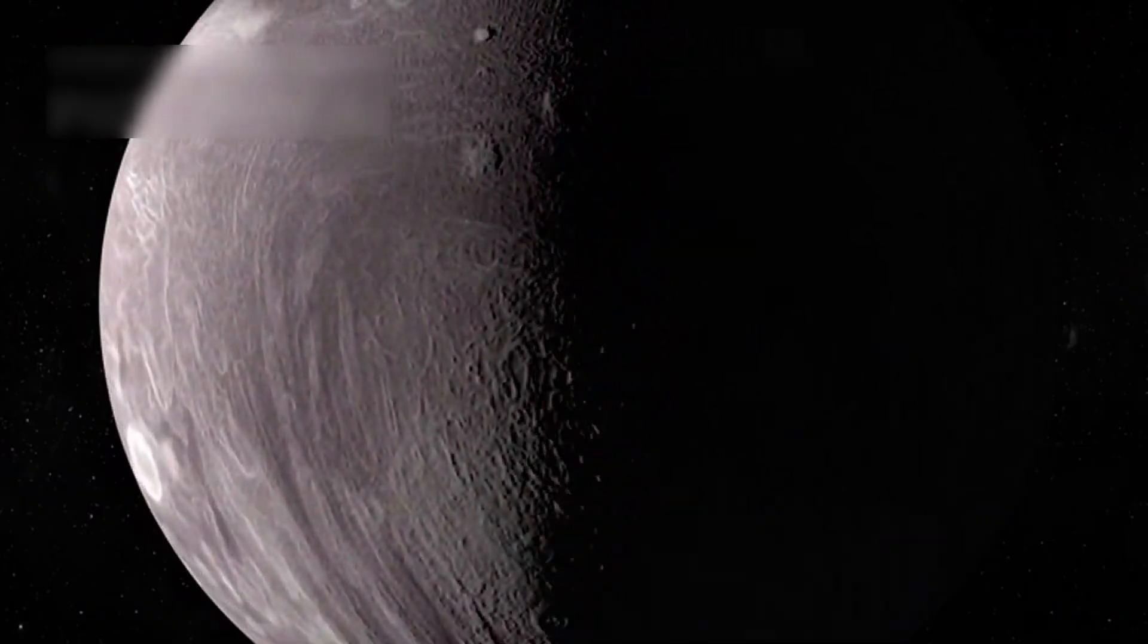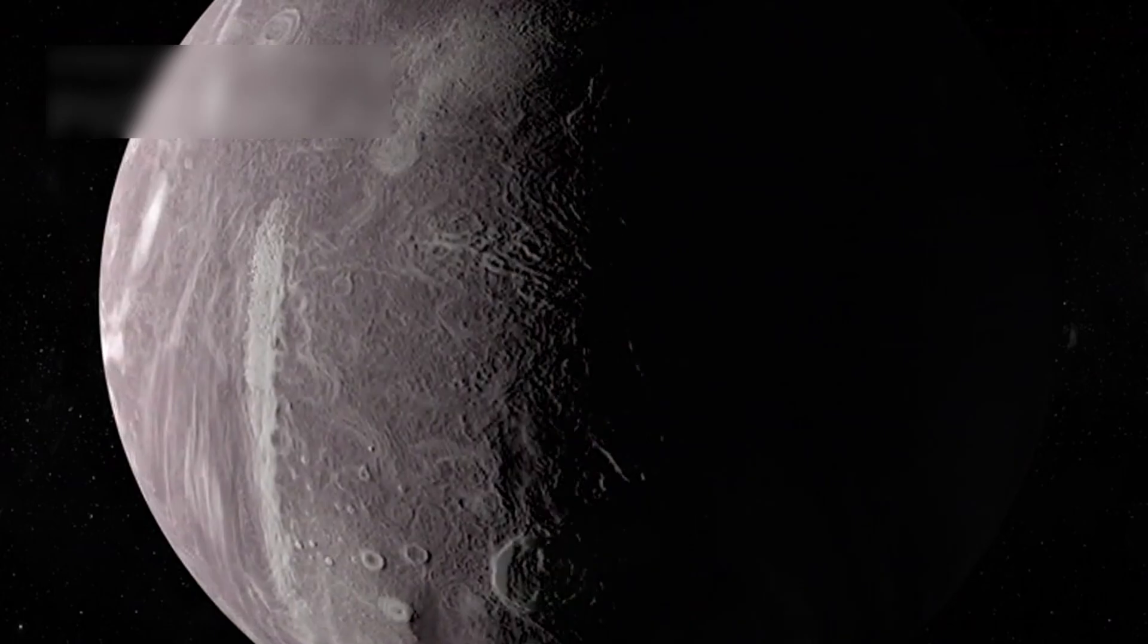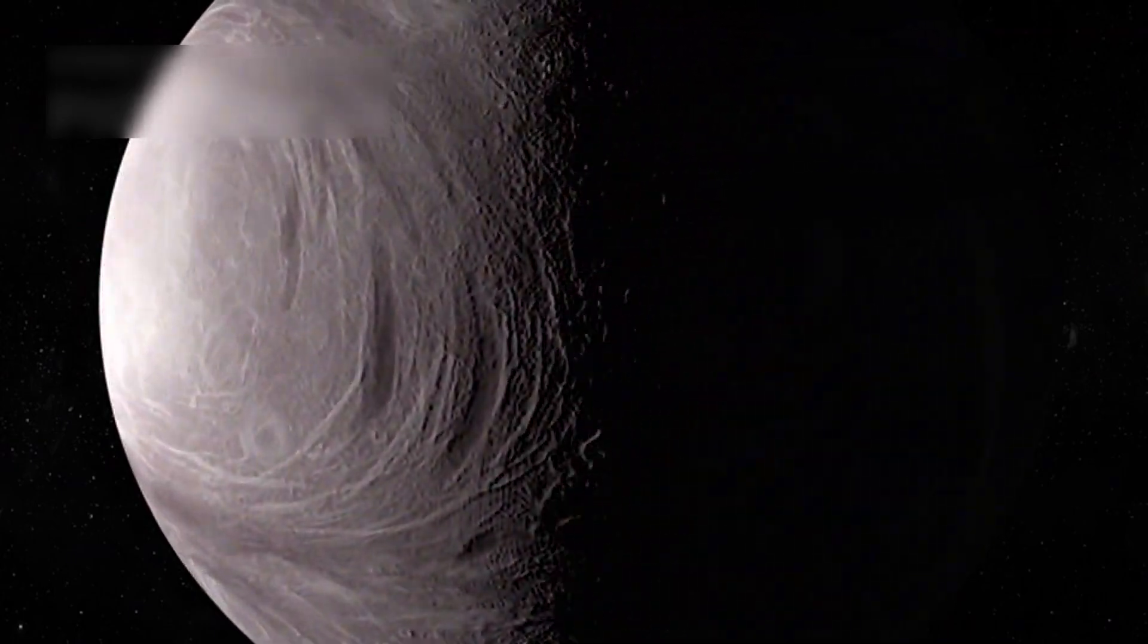Voyager 2 helped discover Miranda, a moon of Uranus, with fascinating geological features in a twisted terrain.